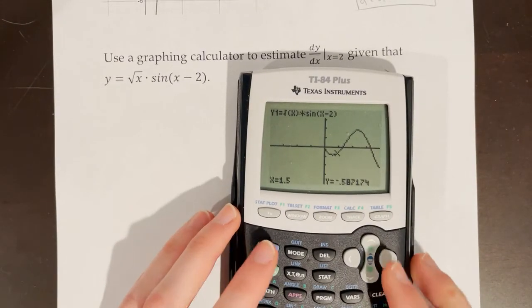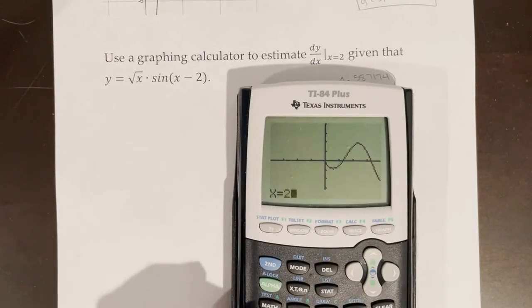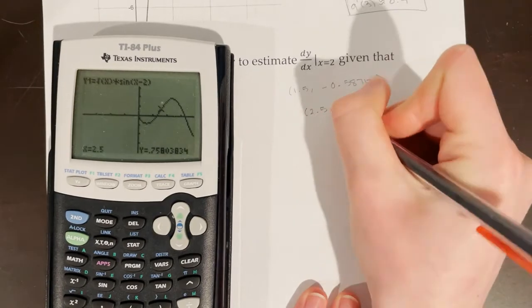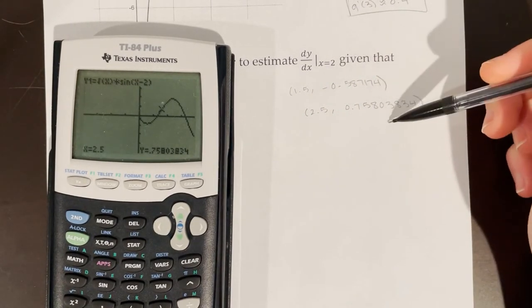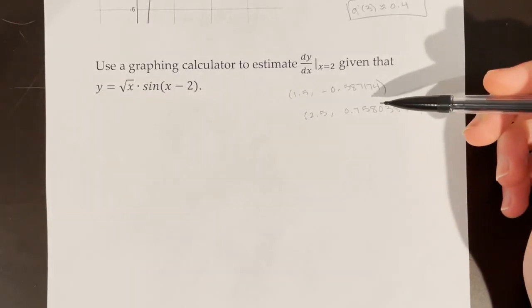And then for my other point, I'm going to do that same thing. I'm going to hit second calculate another value and I want it to calculate the value at 2.5. Here's another point. And I'm hanging on to as many decimals as I can because I don't round or truncate until the very end of the problem. Now I'm just going to find the slope between these two points.